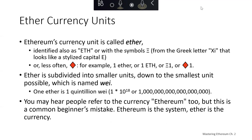Ethereum's currency unit is not actually called Ethereum. Instead, it's called Ether, and it's typically abbreviated ETH. Ether can be subdivided into smaller units. The tiniest unit is a Wei. One Ether is 10 to the 18 Wei.